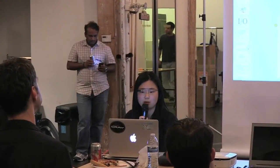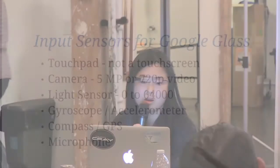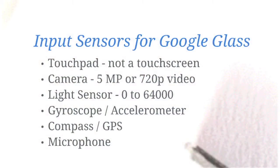My method is to look at what sensors are available on the device. This is from Catwig — they did a teardown of Glass — and I highlighted each of the components that are good input devices. I'll quickly go over what they do and how the design methodology differs for traditional Android tablet and phone development versus Glass. The input sensors include a touchpad, and the key thing is that this is not a touch screen.